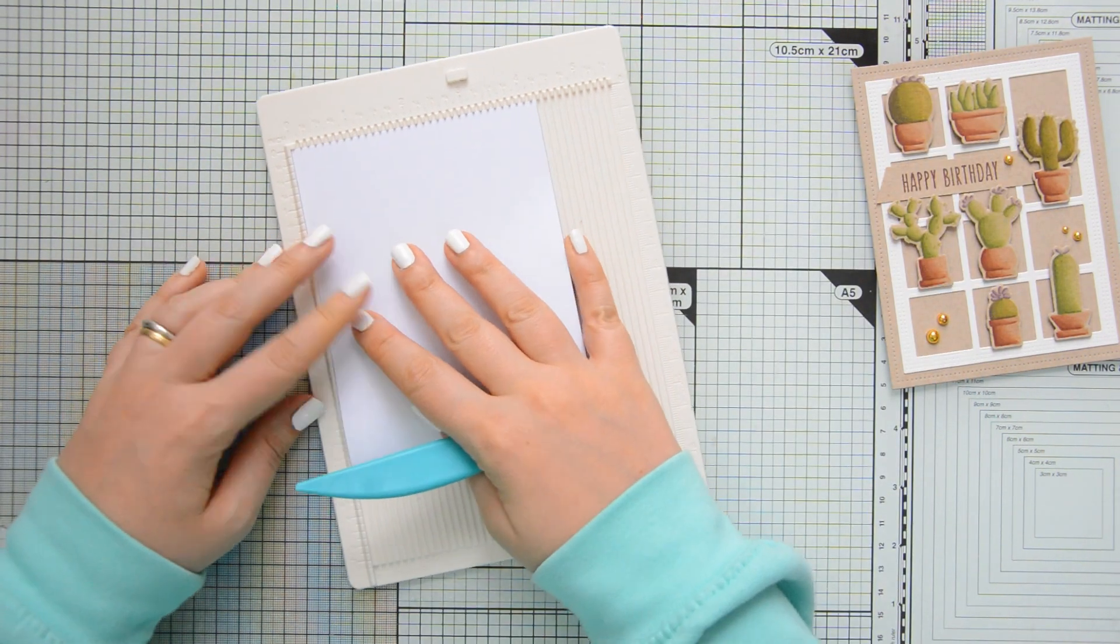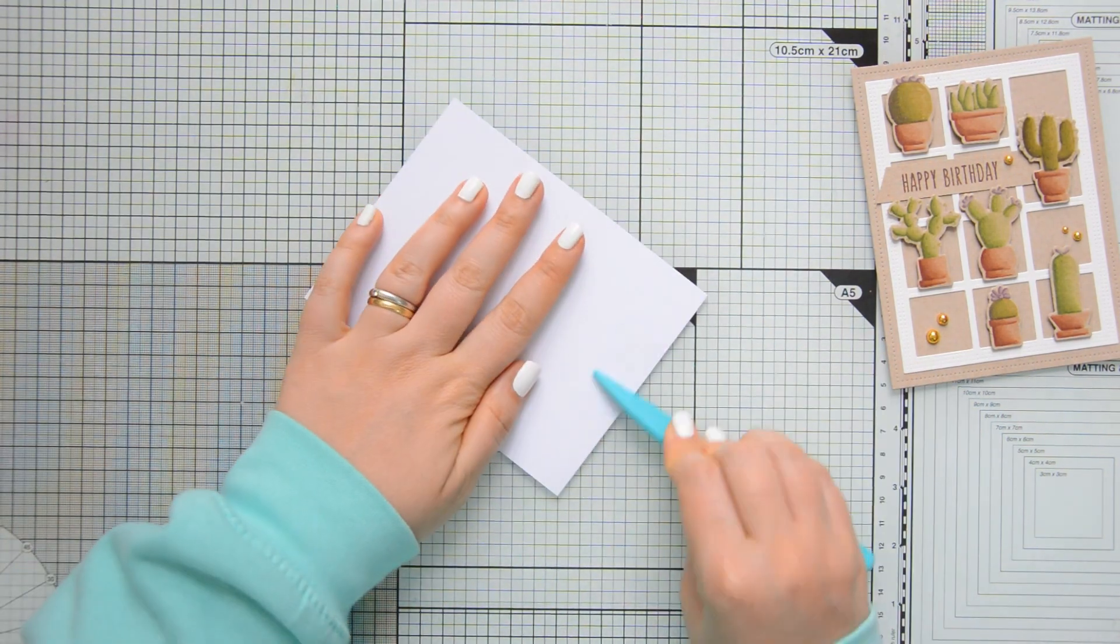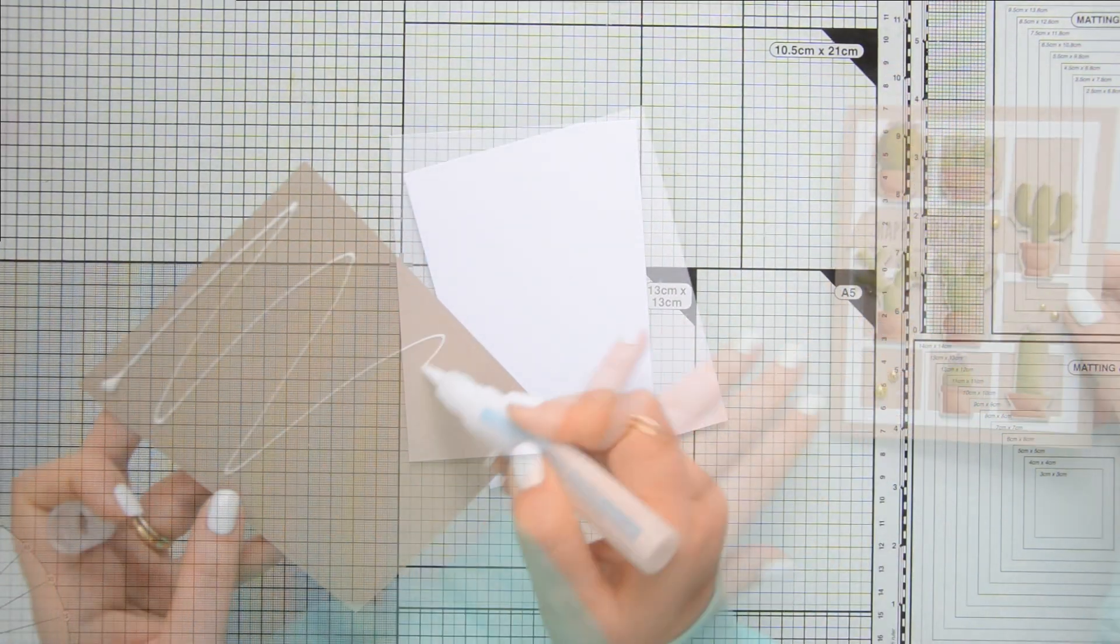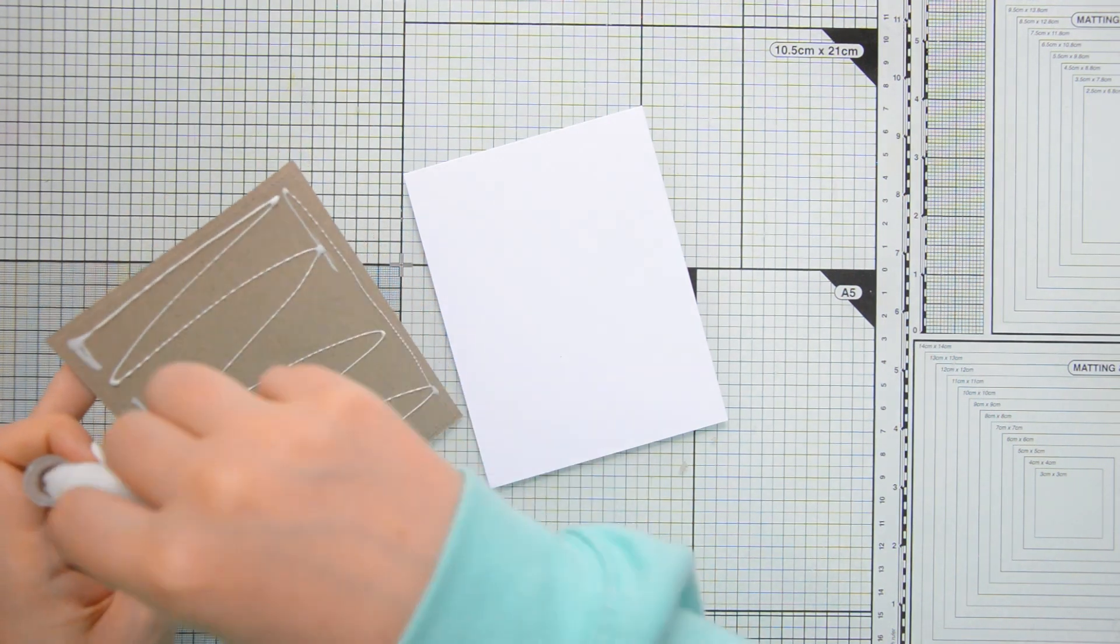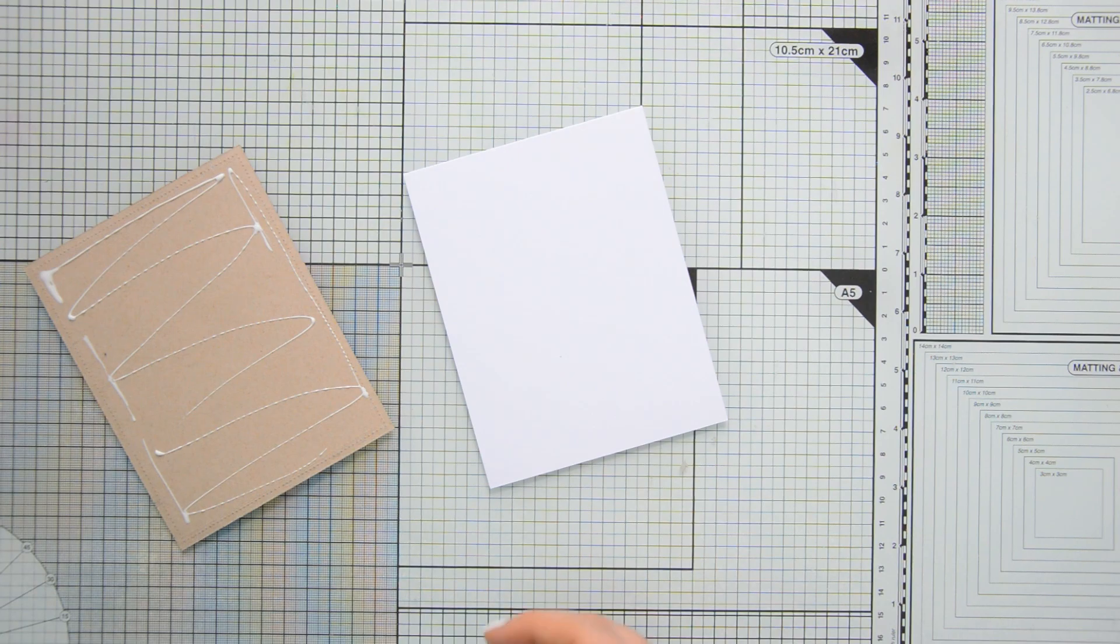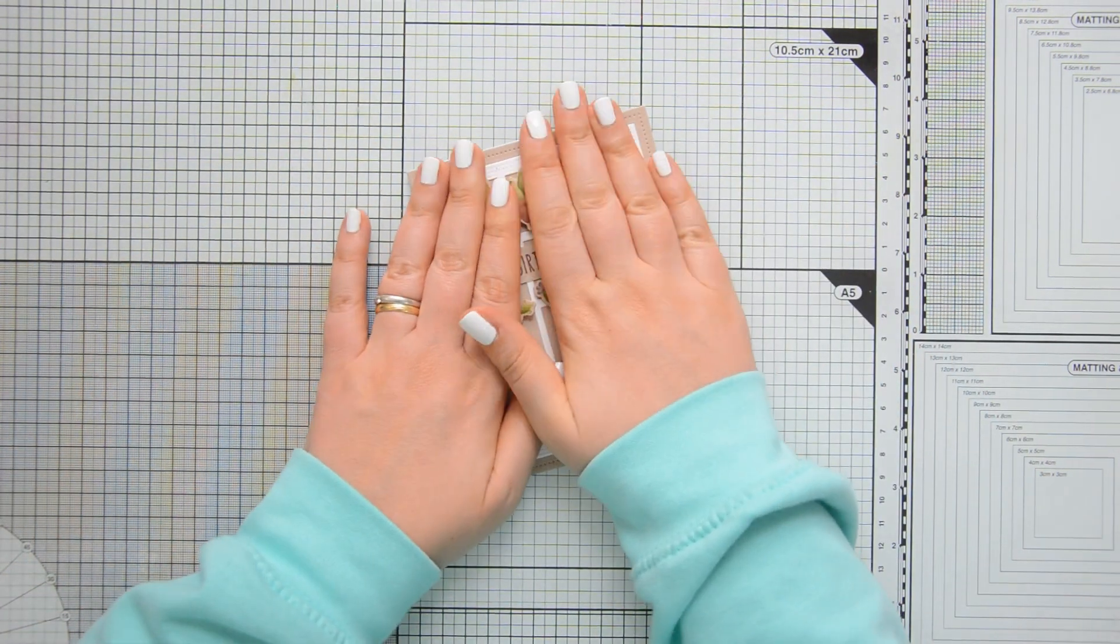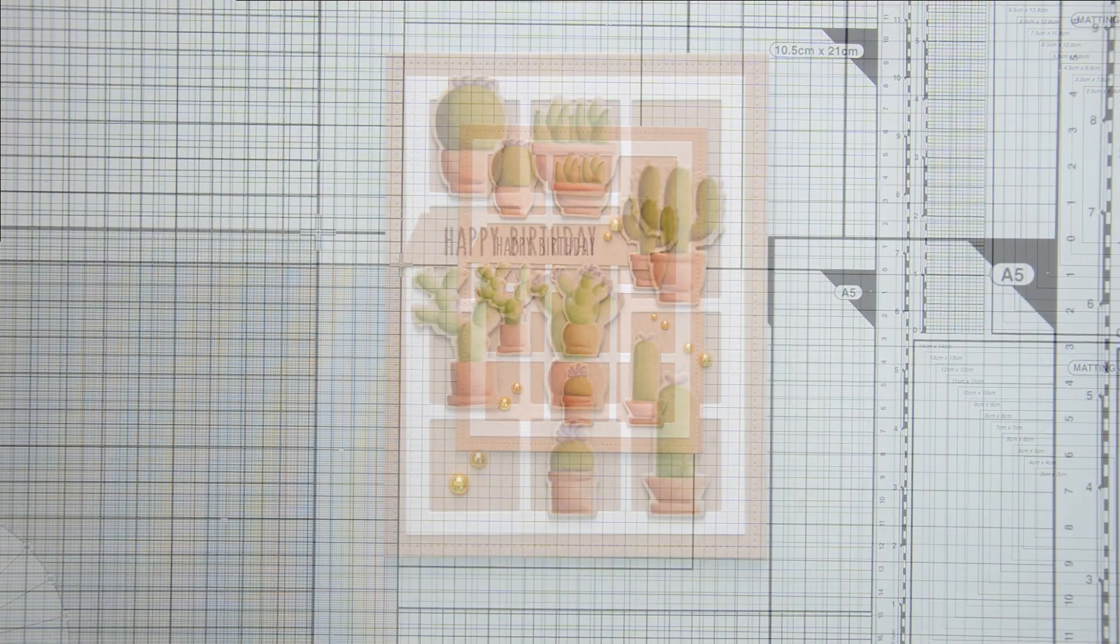I have my card base here, this is some heavyweight white cardstock cut to 4 and a quarter by 11 inches and scored at 5 and a half inches. I'm going to use again my Studio Katia liquid glue to adhere the card front to the card base. I made sure that everything is aligned correctly and that finished off my card.